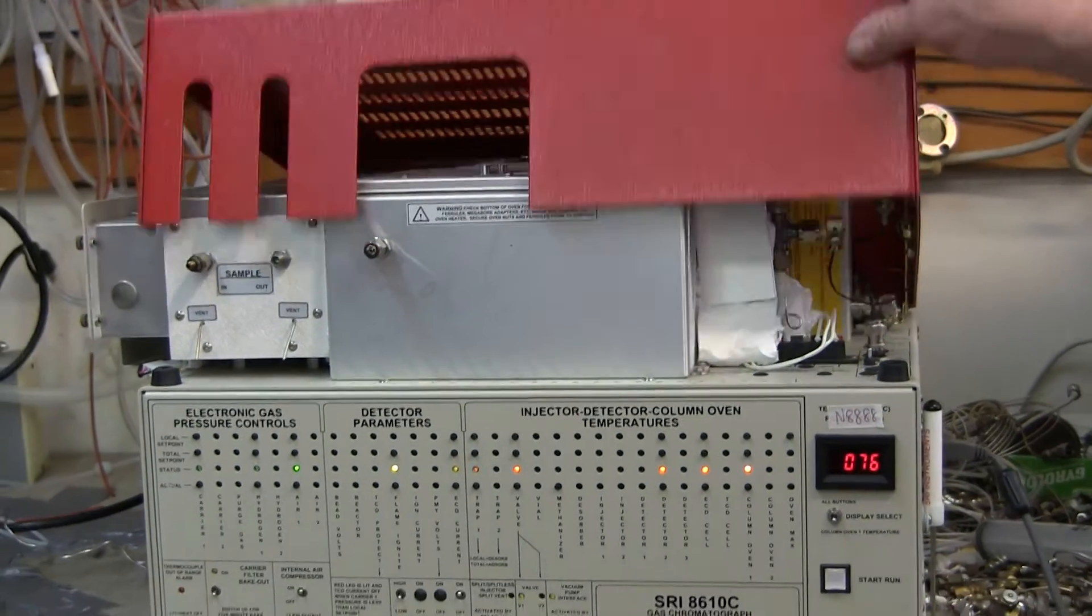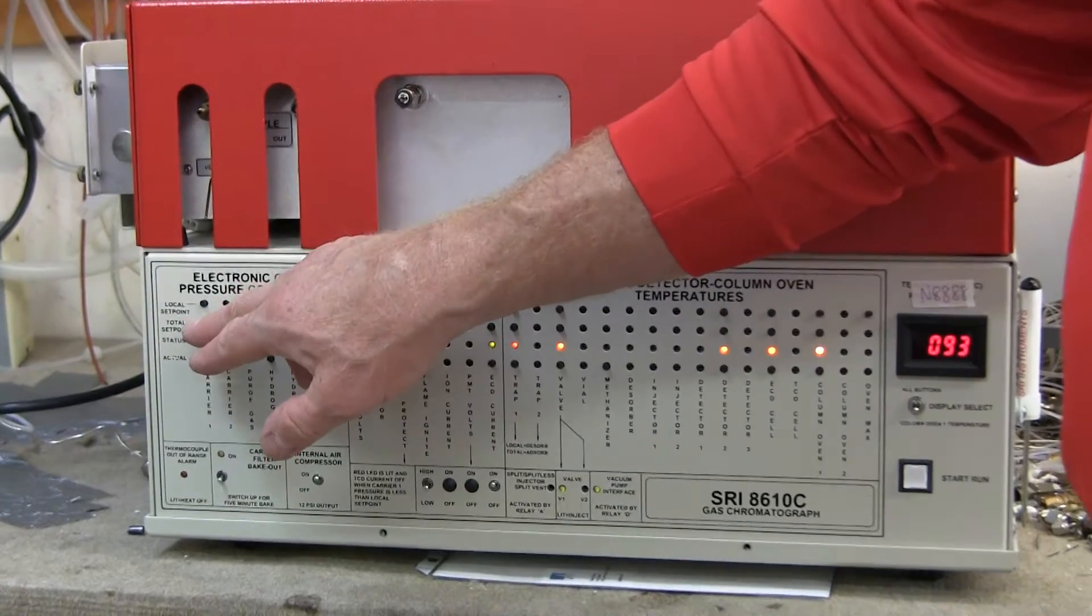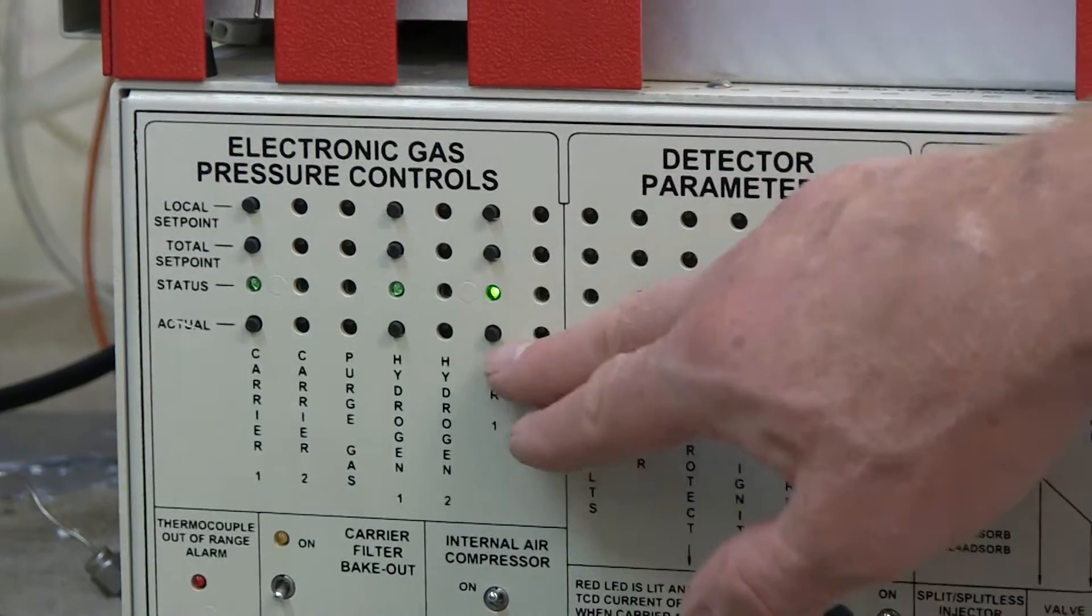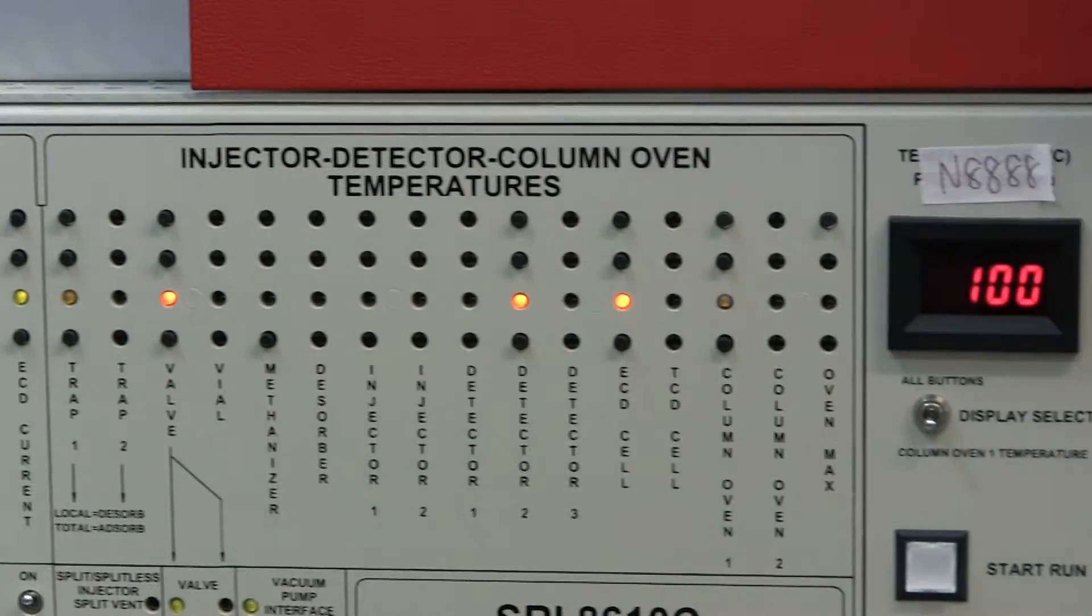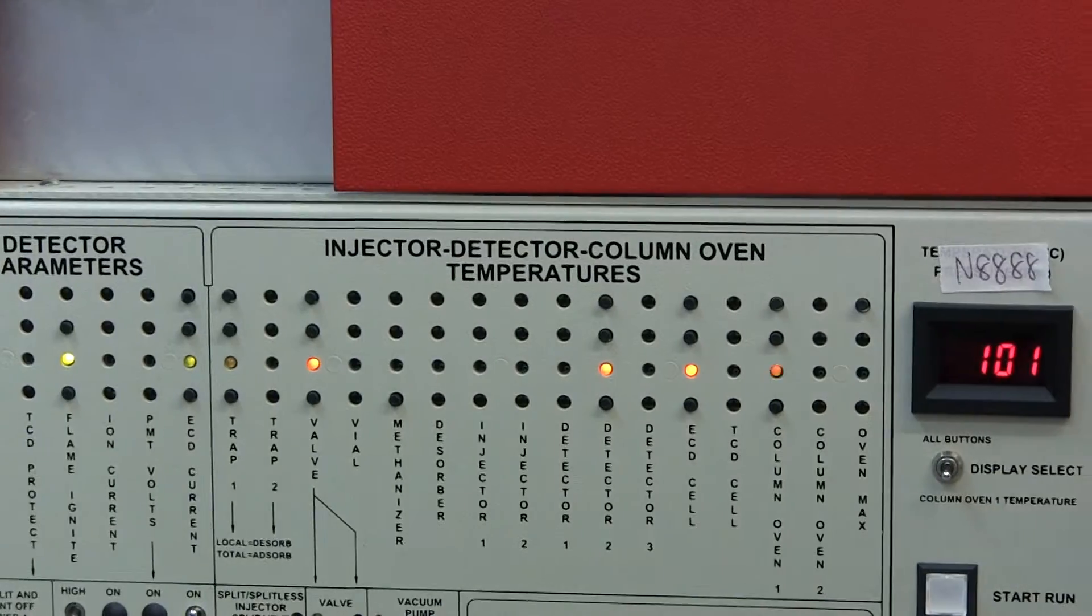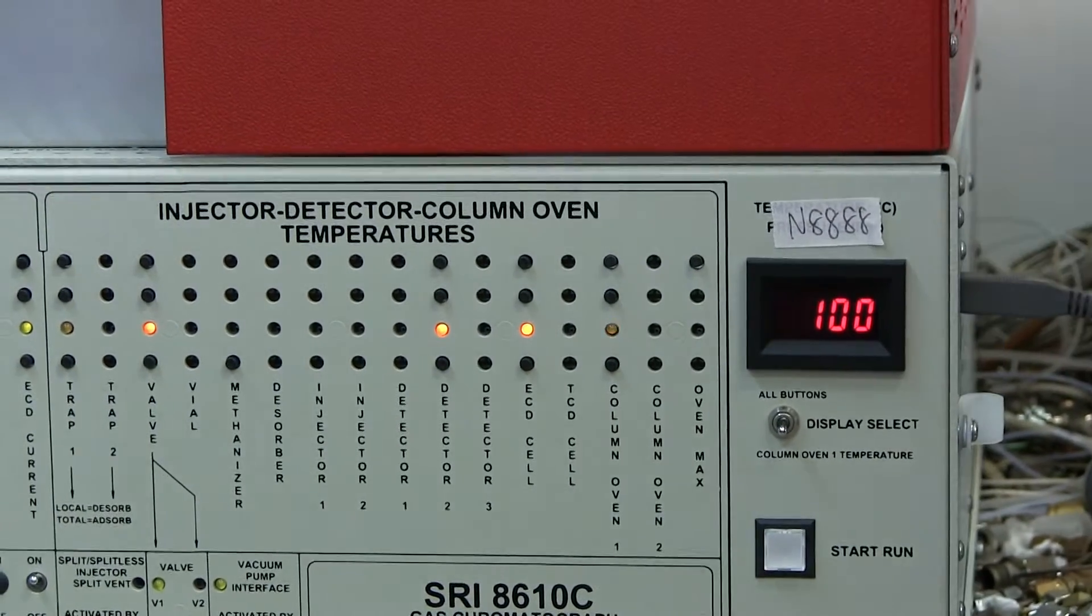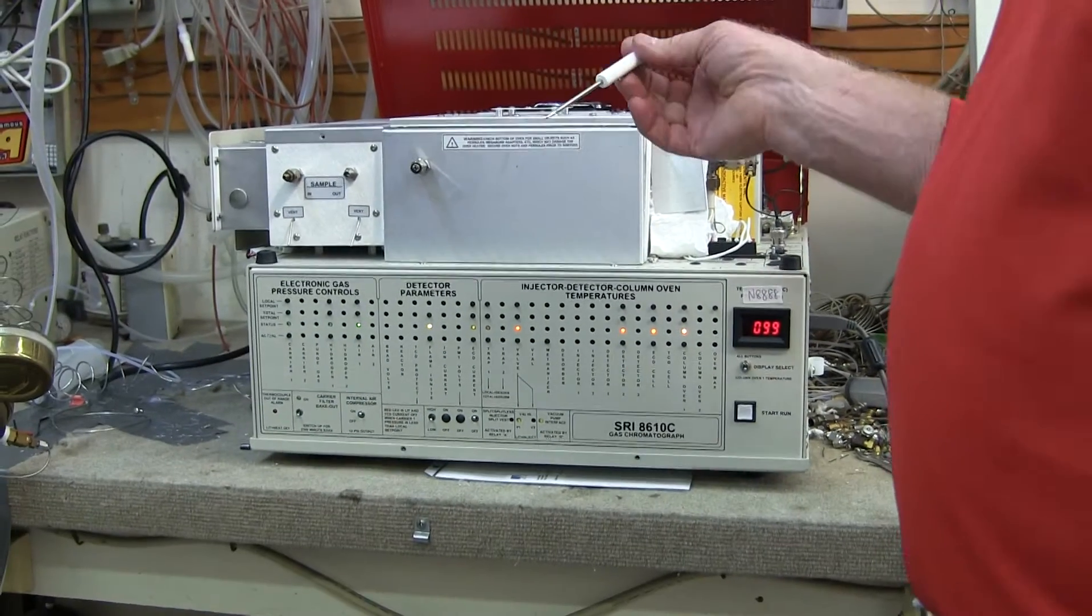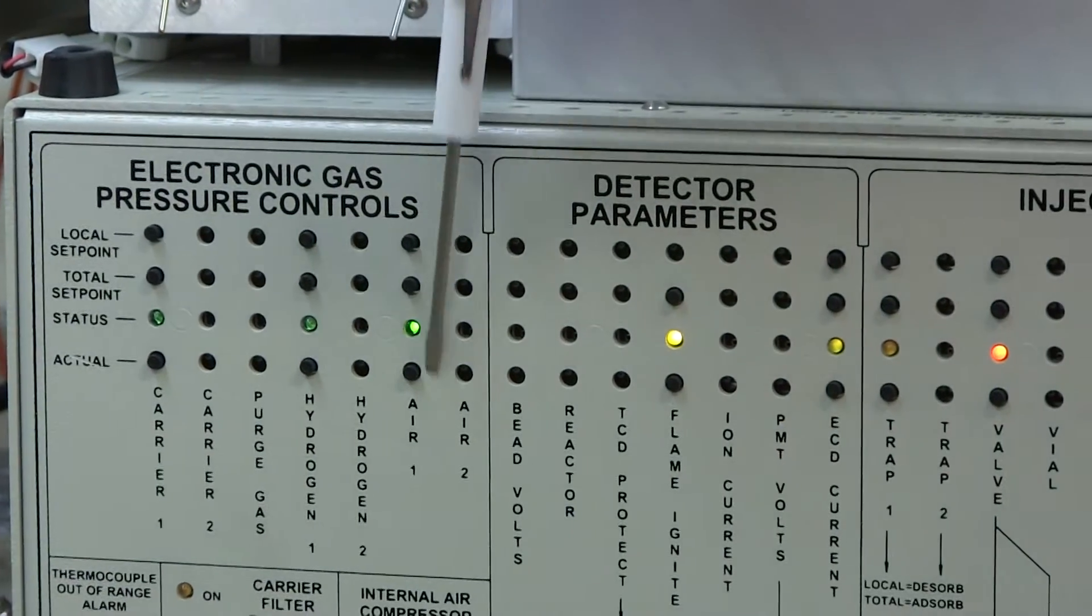The way the SRI system works is that all the controls for the GC are these little buttons on the front panel. Sometimes there's only two but most of the time they're adjusted with the screwdriver which comes with the SRI GC and mounts here in a little holster on the right-hand side. For instance, if you wanted to change the pressure of one of the gases, this particular GC has a carrier gas, hydrogen gas, and air.